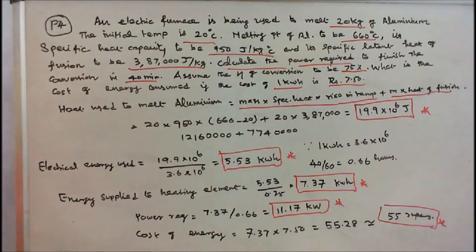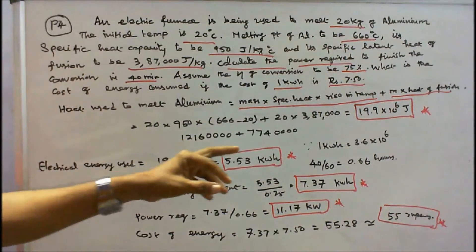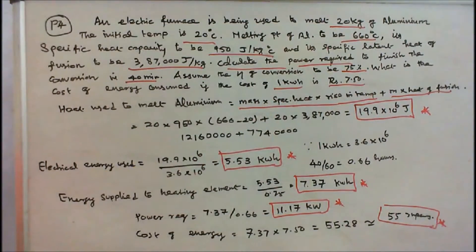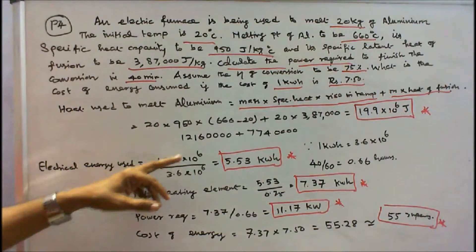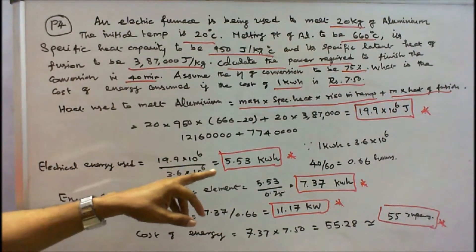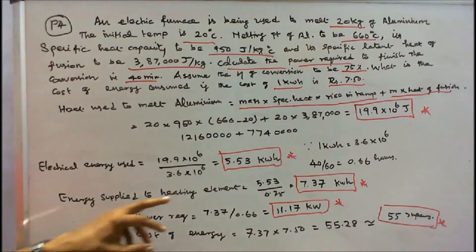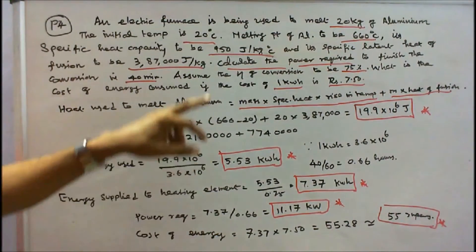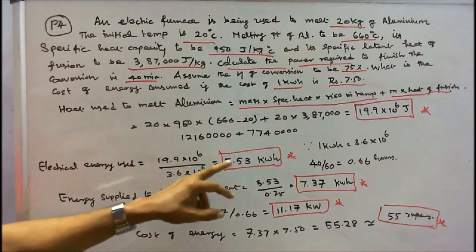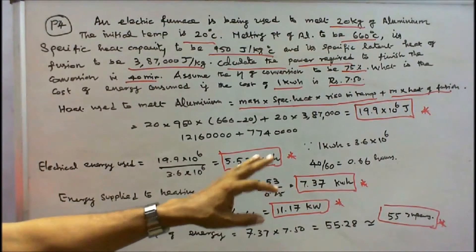Next, we convert to electrical energy. Since 1 kWh equals 3.6 into 10⁶ joules, the energy needed is 19.9 into 10⁶ divided by 3.6 into 10⁶, which is 5.53 kWh. The conversion efficiency is 75%, so energy supplied to the heating element is 5.53 divided by 0.75, equal to 7.37 kWh.